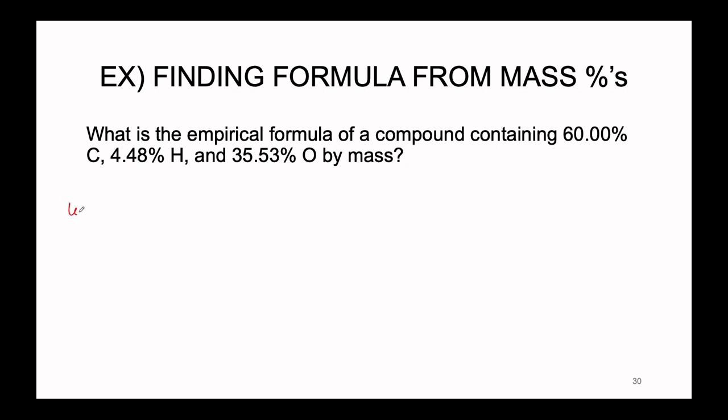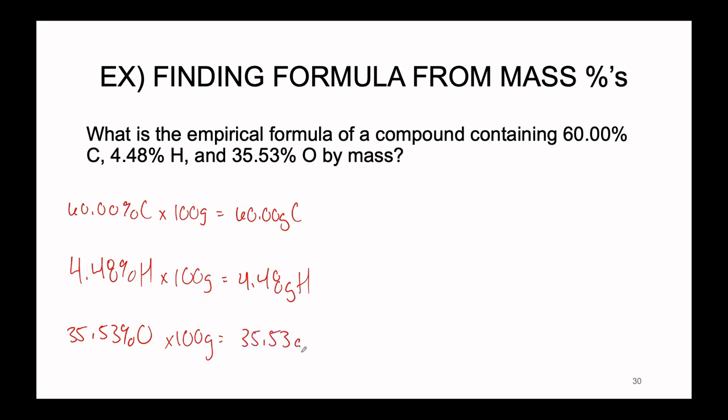So let's work through this problem together and then address any strangenesses that might have occurred along the way. All right, so we're starting with 60.00% carbon, 4.48% hydrogen, and 35.53% oxygen all by mass. So just like before, our first step is going to be that we are going to assume 100 grams of our starting material.